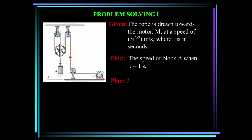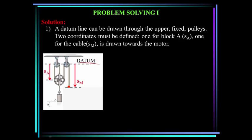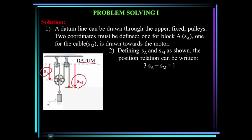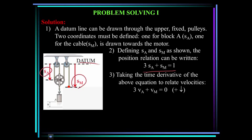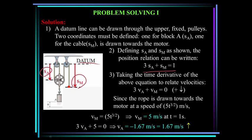Here's another problem. The rope is drawn towards the motor M at a speed of 5T to the 3.5 power meters per second, where T is in seconds. Find the speed of block A when T equals one second. Draw a datum line through the upper fixed pulleys. Define two coordinates: SA for block A and SM for the cable as it's drawn towards the motor. The position relationship is written as 3SA plus SM equals L. Taking the time derivative gives 3VA plus VM equals zero. At time T equals 1 second, VM equals 5 meters per second, therefore the velocity of A is minus 1.67 meters per second — in the upward direction.